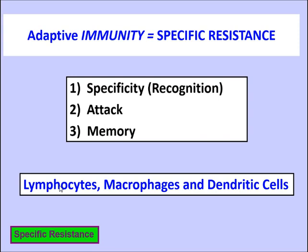The T lymphocytes will leave the red bone marrow and go to the thymus gland. We're going to talk about the thymus gland in lab, but it's important that you understand what happens at the thymus for these T cells.